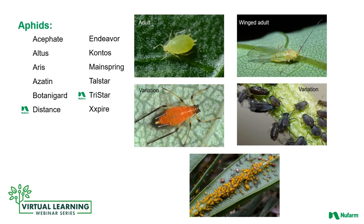Aphids seem to never leave the production area. Able to reproduce asexually, these are the rabbits of the greenhouse insect pests. Aphids may take on different appearances based on the plants on which they feed, and winged adult aphids can fly to other plants and spread. Controlling with both contact and systemic insecticides provides the best process to manage this pest. Systemic products such as Altus, Contos, Mainspring, and Tristar, plus contact insecticides, will control aphids. Include Distance insect growth regulator to prevent resistance and stop immatures from becoming adults.